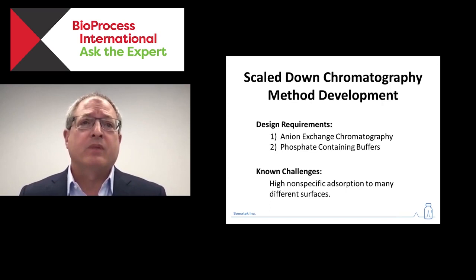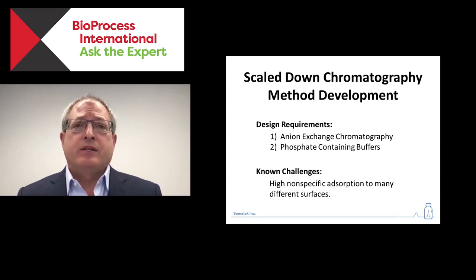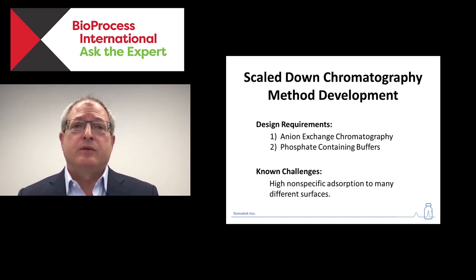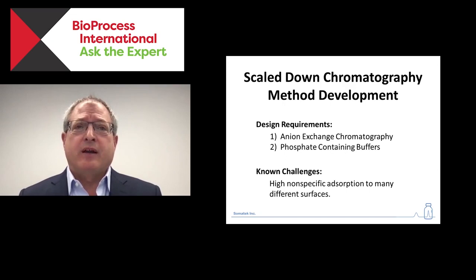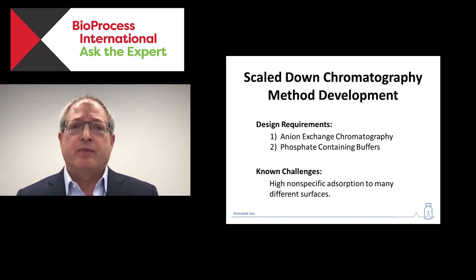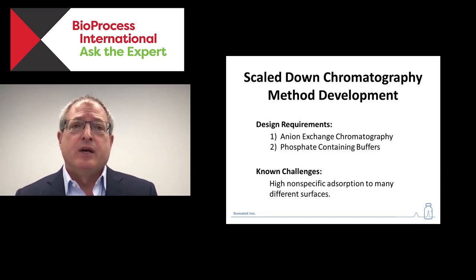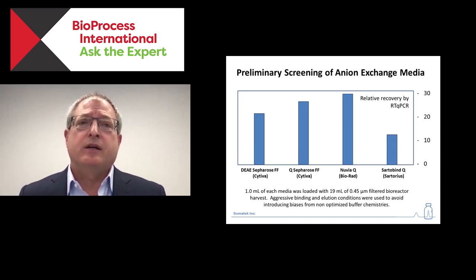Getting to the actual work, I want to address some design space constraints going into this project. One is that we needed to use anionic exchange chromatography. The second was we needed to use phosphate-containing buffers — that had to do with product stability. Phosphate buffers and anionic exchange columns tend not to play so nicely together, so we had to be mindful of that. We were also routinely seeing a lot of nonspecific adsorption to different surfaces, which informed some of our initial screening studies.